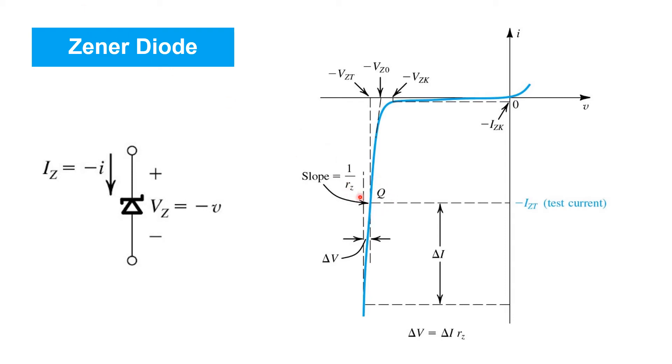On this plot, Q identifies a nominal operating point for the zener diode, where reverse current IZT is flowing and reverse zener voltage VZT appears. Now for small changes in the reverse voltage around this operating point Q, we expect changes in current to arise. And those changes in voltage and changes in current are related by the slope of this portion of the plot, which has units of 1 over ohms, and is therefore similar to the IV characteristic of a resistor, except that it's shifted away from the origin around this operating point Q.